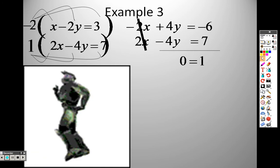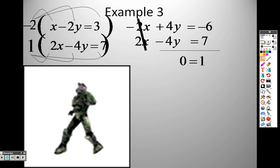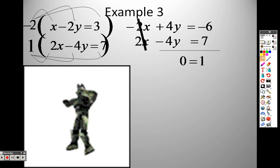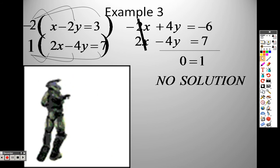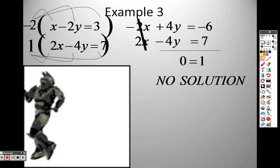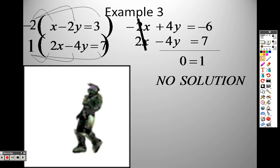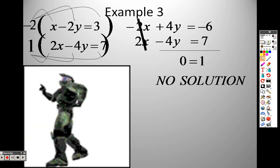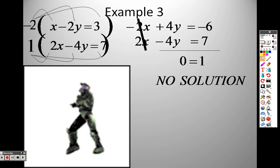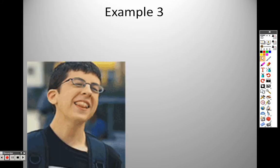0 equals 1, right? Well, that makes absolutely no sense, because it makes absolutely no sense. That's telling me that there is no solution to the problem. What that means is these lines aren't going to touch each other ever. There's no solution to this problem, because these two lines are never going to cross each other. If they're never going to cross each other, then there's going to be no solution to the problem.